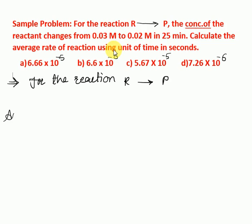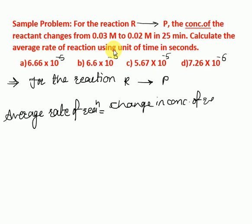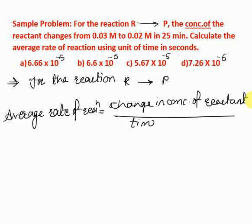For the reaction, reactant goes to product. The formula for average rate of reaction equals the change in concentration of reactant or product divided by the time taken.